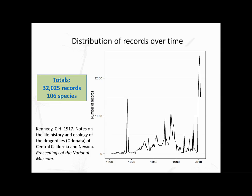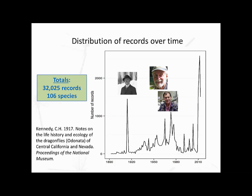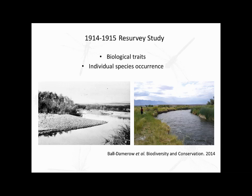I wanted to show how we can use a database like this as a data discovery tool to identify promising datasets for further study. The distribution of records over time shows spikes largely resulting from collections by Odonate specialists. The first spike in the early 1900s was work by Clarence Hamilton Kennedy throughout California and Nevada, who published findings of Odonate assemblages at different sites in the Proceedings of the National Museum. I resurveyed these sites — here are pictures of one site on the Owens River in the Owens Valley in 1914 and in 2012.